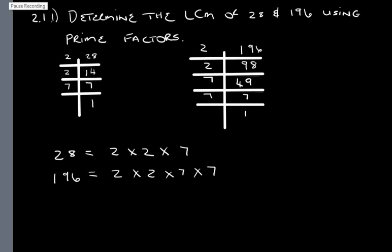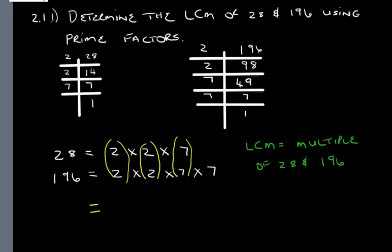So 28 is equal to 2 times 2 times 7. And 196 is equal to 2 times 2 times 7 times 7. What we need to do now is group the ones that are the same. So we've grouped 2 and 2. And what we do is write down, because they are grouped we write down 2. That's grouped. So we write down another 2. That's grouped. So we write down 7. And this is a single.